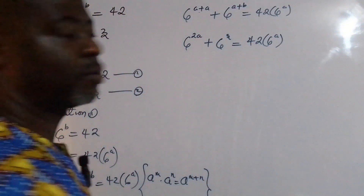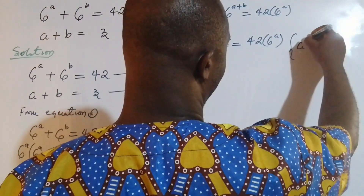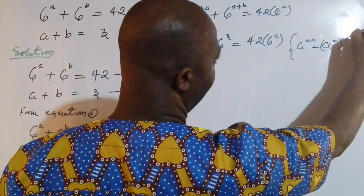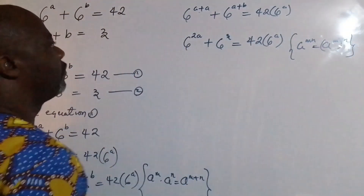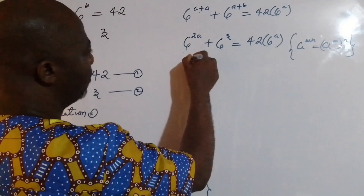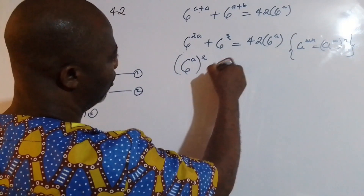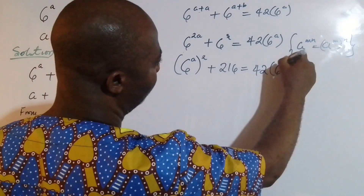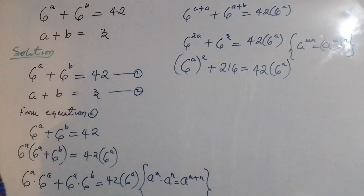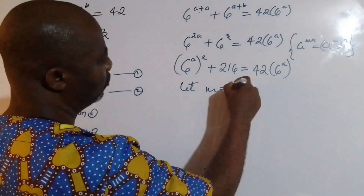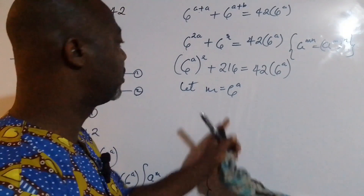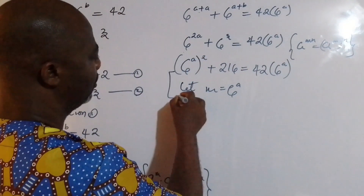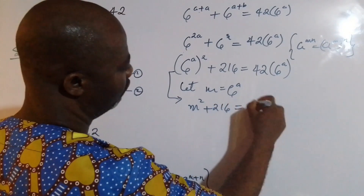I'm going to apply another exponential law: a^(mn) = (a^m)^n. Applying that to 6^(2a) gives us (6^a)^2. And 6^3 = 216. So we have (6^a)^2 + 216 = 42 · 6^a. Now I'm going to let m = 6^a, so wherever we find 6^a we replace it with m.